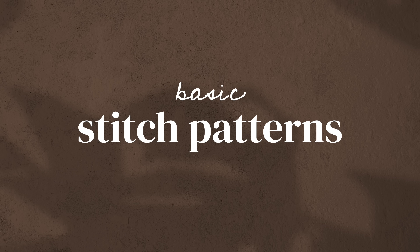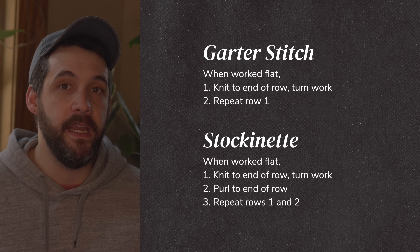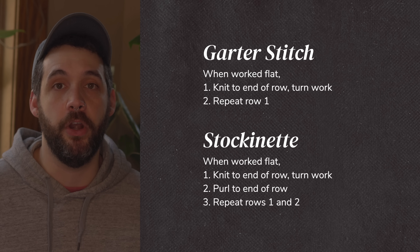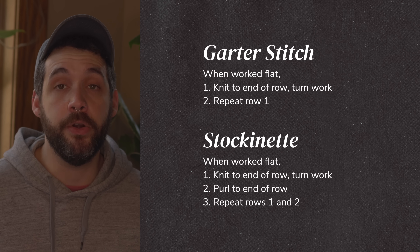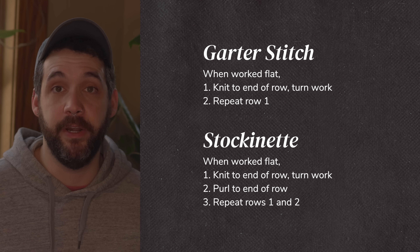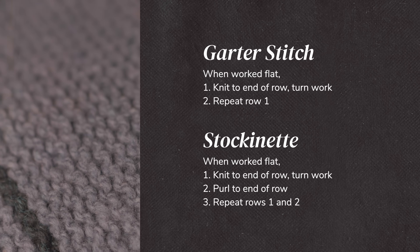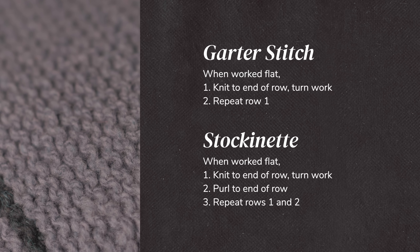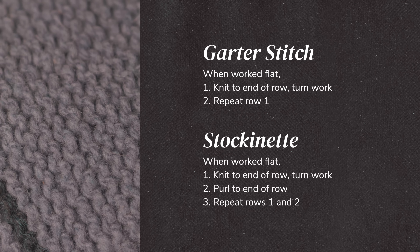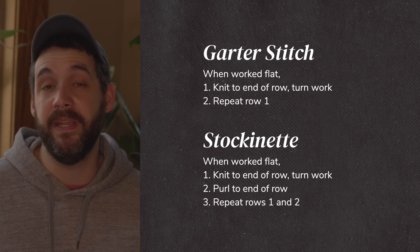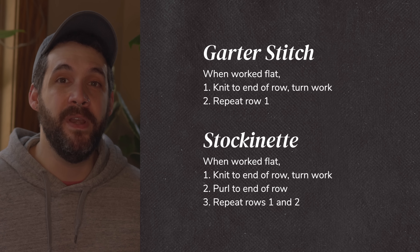Now it's a good time to talk about basic stitch patterns you'll see most often as a beginner. The first thing you might learn is garter stitch. Knitting flat — like a scarf or dishcloth — garter stitch is when you knit every single row. You knit the first row, turn your work, knit, turn your work, knit. You end up with ridges and a really plump, beautiful fabric.